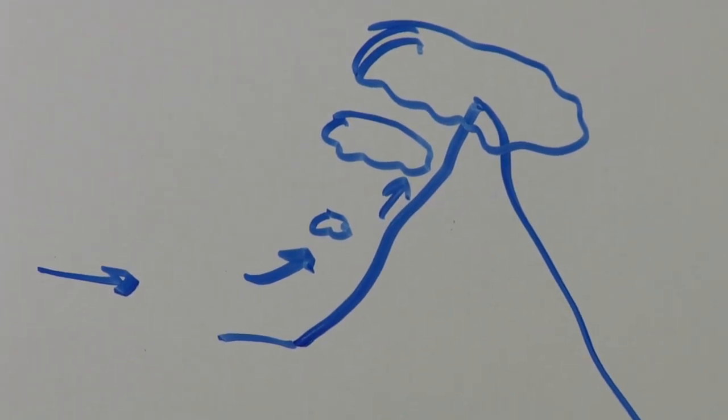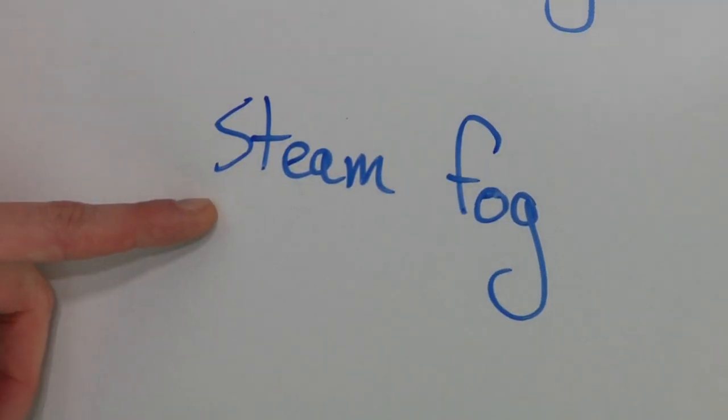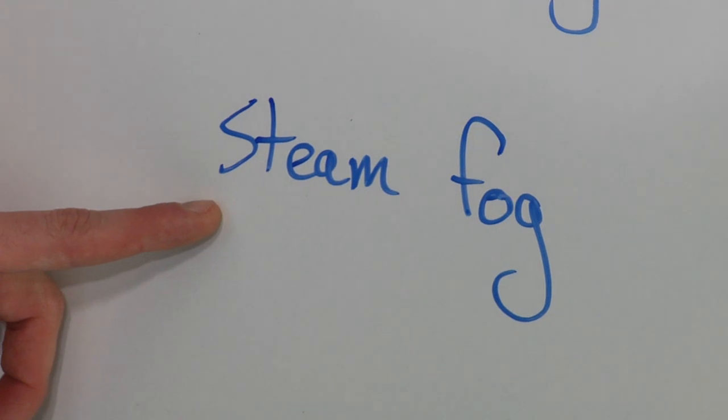Our last type of fog is steam fog. Steam fog occurs when a cool air mass moves over a relatively warm water body or land mass — this is kind of the opposite of advection fog. The warm heat coming off the water body meets the cold air mass and causes the water to condense, forming steam fog. This has been a discussion of the four main types of fog and how they form.